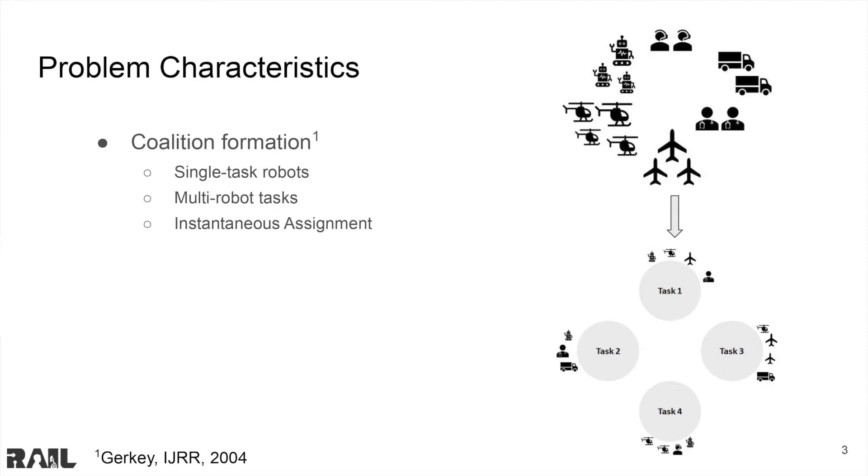The coalition formation problem involves single-task robots, multi-robot tasks, and instantaneous assignment. This means that each robot can only handle one task at a time, each task can be handled by multiple robots, and a robot does not change assignment after it has been assigned. Additionally, we account for uncertainty in agent capabilities.